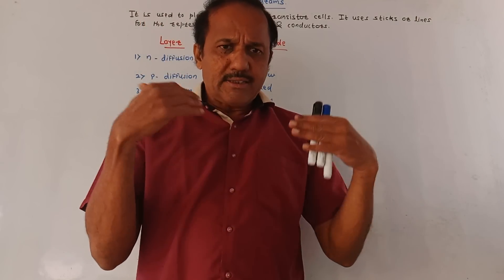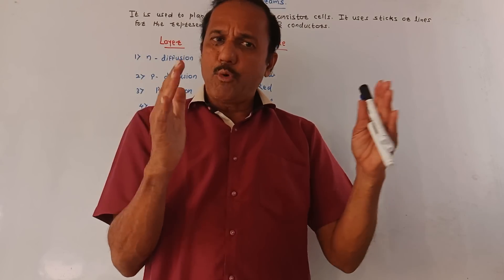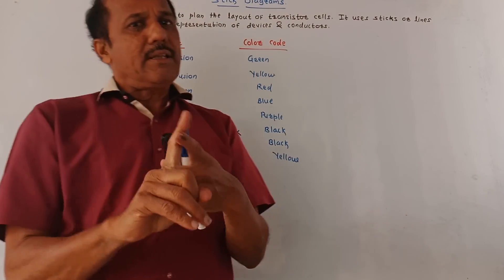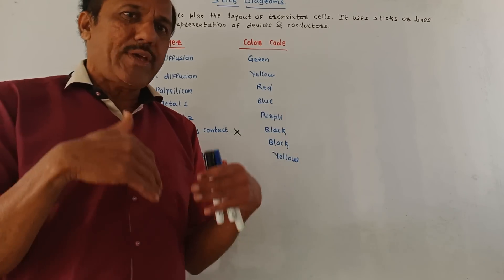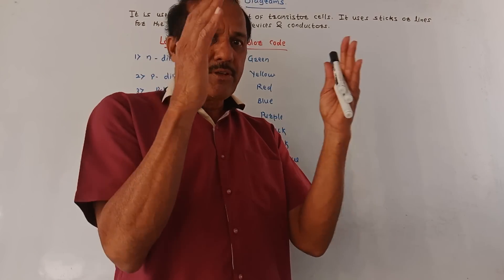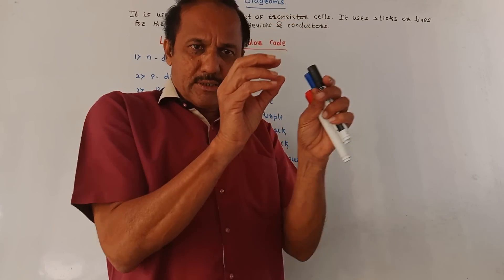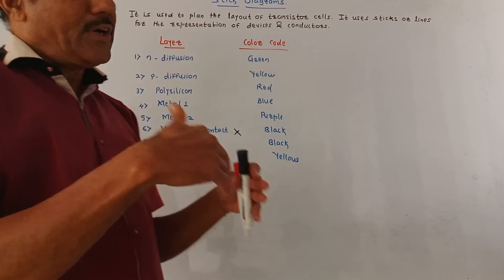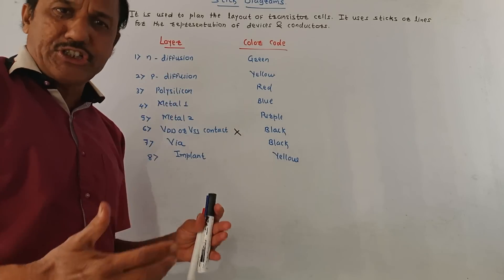There are simple steps for drawing the STICK Diagram. First, you should know the Boolean equation. The Boolean equation must be in the complementary form because we are going to make use of CMOS logic. Then from the Boolean equation, draw the CMOS diagram, and then from the CMOS diagram, we will draw the corresponding STICK Diagram.